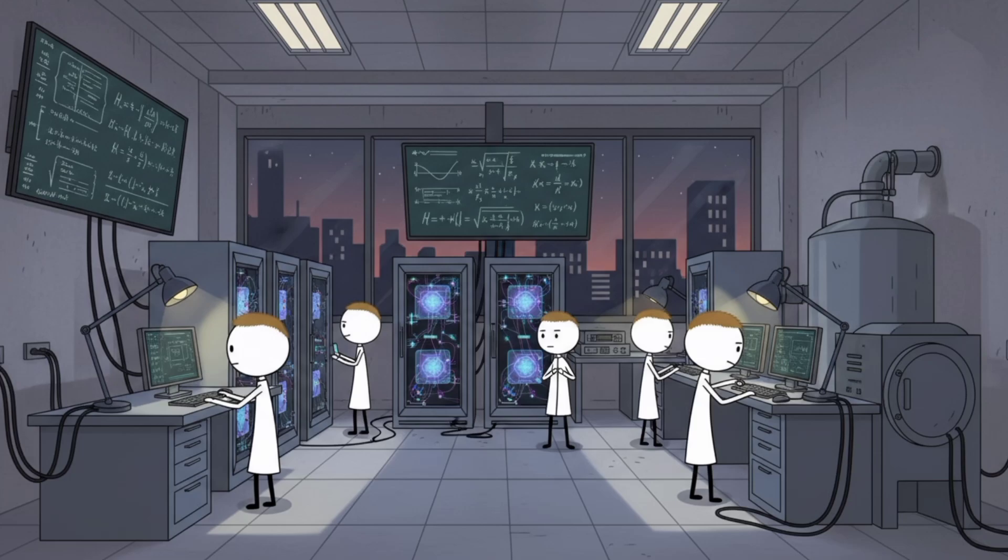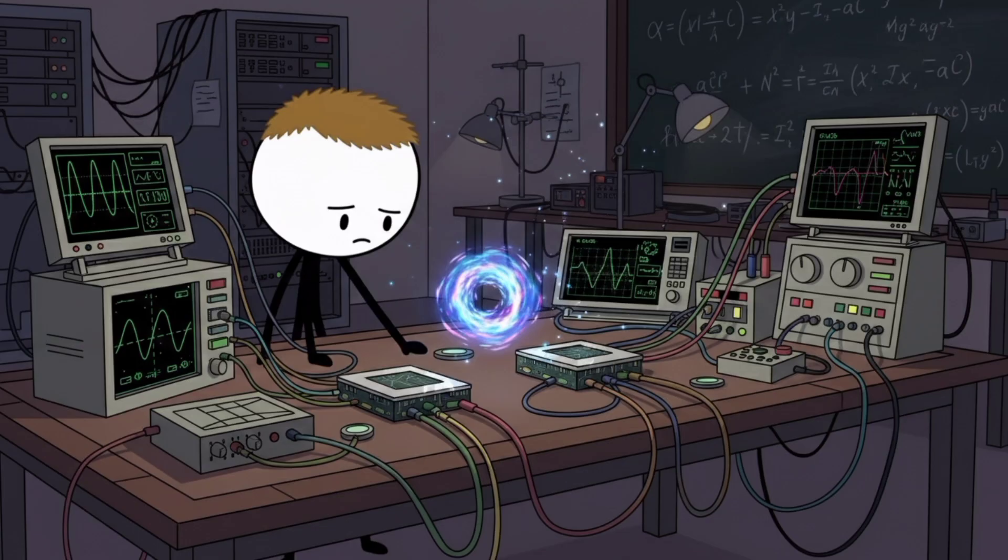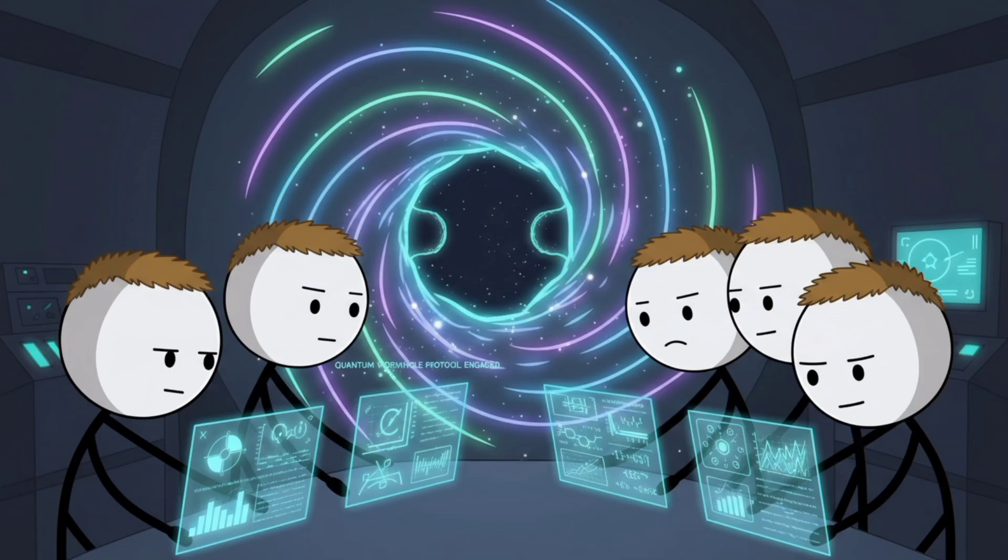This wasn't done in outer space with massive gravitational fields. It was done in a lab with qubits. They created a baby wormhole using quantum mechanics, proving that these cosmic shortcuts aren't just mathematically possible. They're physically real at quantum scales. It's the first time anyone has ever seen wormhole dynamics in action.